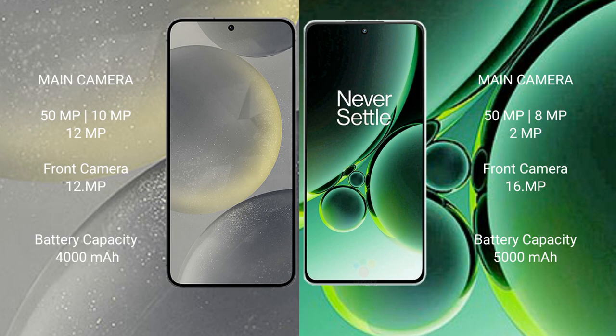Samsung Galaxy S24 has a 4000mAh battery with 25W fast charging support. OnePlus Nord 3 has a 5000mAh battery with 80W fast charging support.